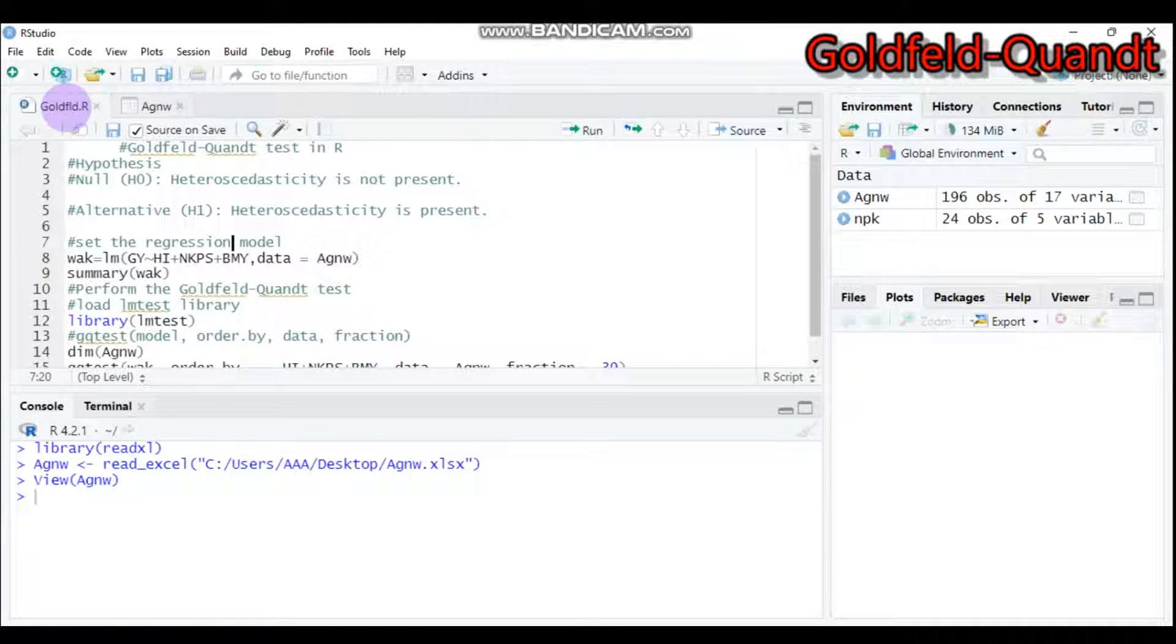Then let's set a multiple regression model. Here GY is the response variable, and the remaining RHI, NKPS, BMY, and others are our predictors. Don't forget to indicate your data name. In our case, our data name is AGNW. Type this and submit to R Studio.